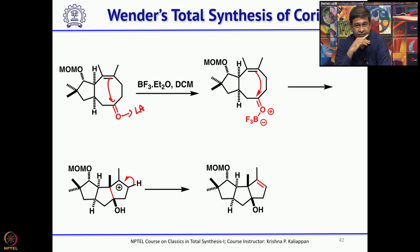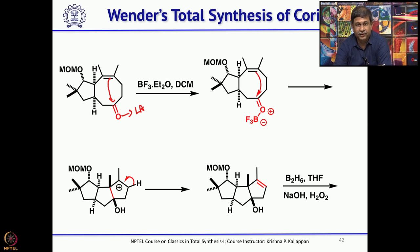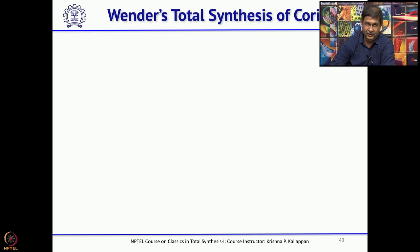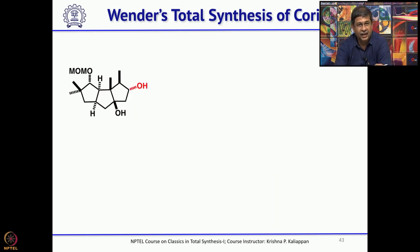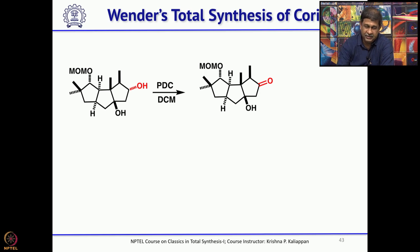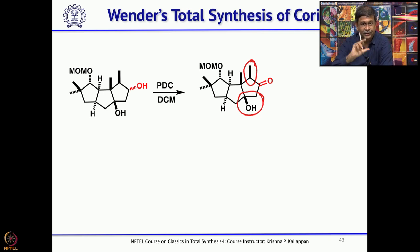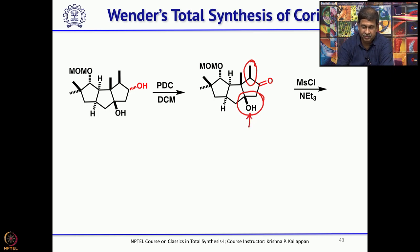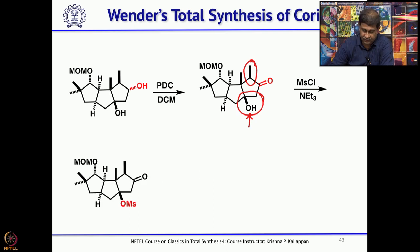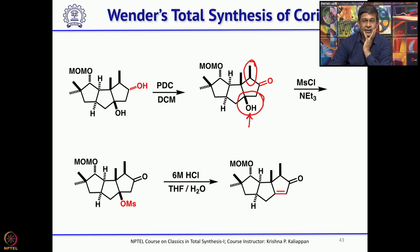A few more functional group transformations are required. You perform hydroboration-oxidation on a trisubstituted double bond to introduce a hydroxyl group, oxidize with PDC to give a ketone, then treat with mesyl chloride which not only forms the mesylate but also causes elimination to give the corresponding enone.